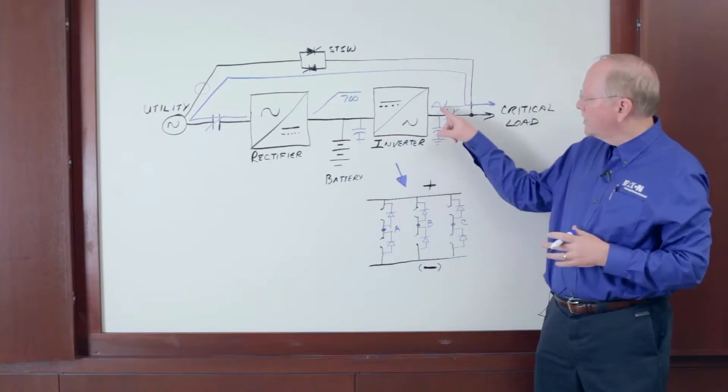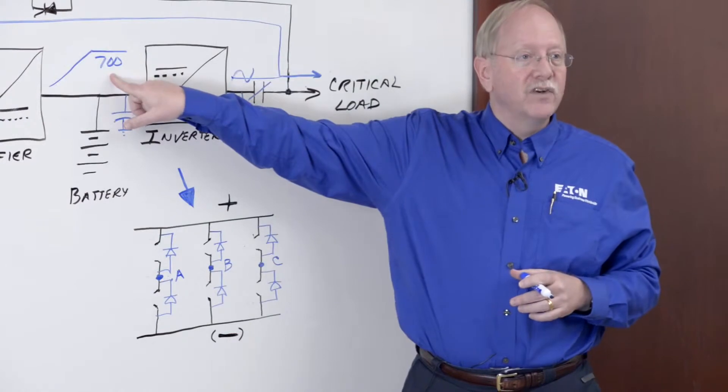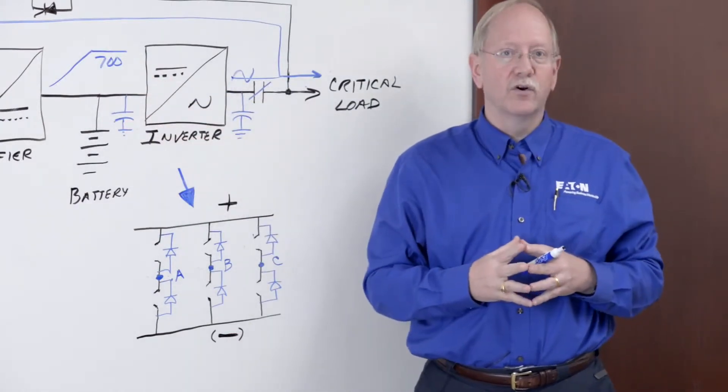This means that the inverter diodes will take the existing AC at this point, rectify it, and create the 700 volts DC that we need to keep the caps charged and to quick start the inverter when necessary.